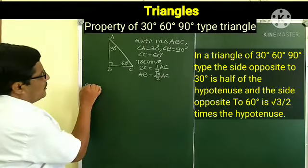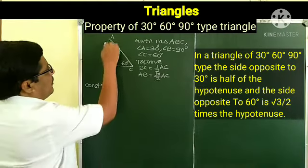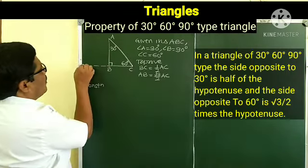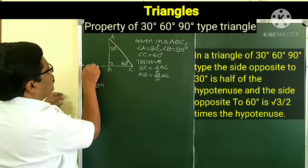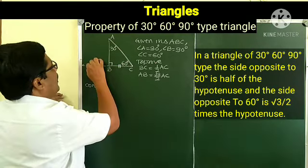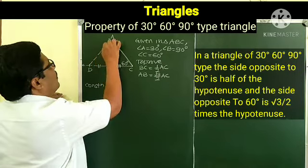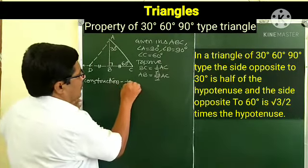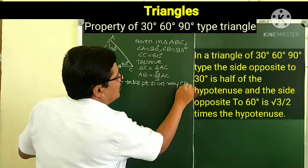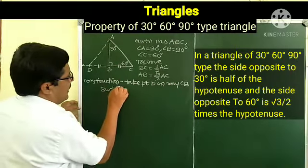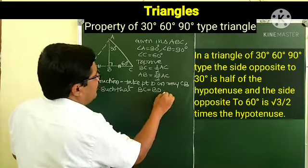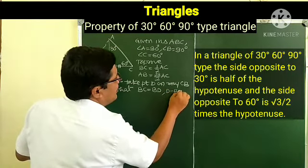Take point D on ray CB such that BC equals BD, with D–B–C. In triangle ABD and triangle ABC: segment AB is the common side, angle ABD is congruent to angle ABC — both are right angles (90°) — and segment BD is congruent to segment BC by construction.